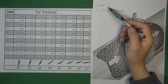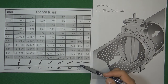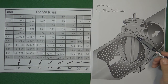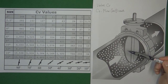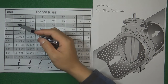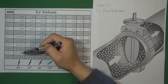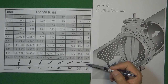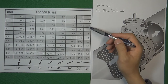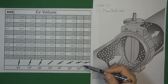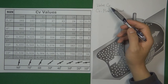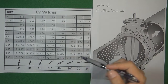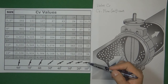Another thing is the position or the angle of the valve trim. Just like this butterfly valve — if the valve disc is fully opened at 90 degrees, the valve will have very high CV. But if the valve is close to 10 degrees, the valve will have very low CV. So valve CV is related to two things: one is the valve size, and another is the position or the angle of the valve trim.